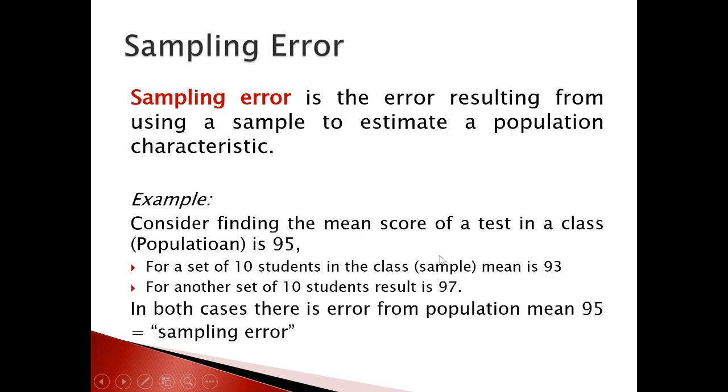Here we can see even though the mean of the whole class is 95, we got different means for the samples. Such an error is known as sampling error.